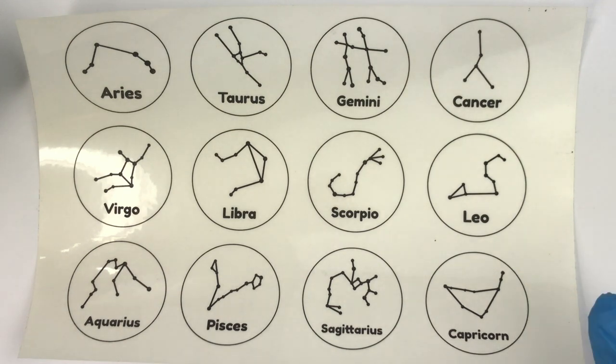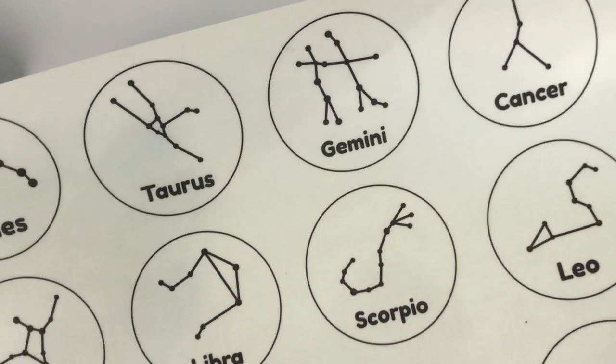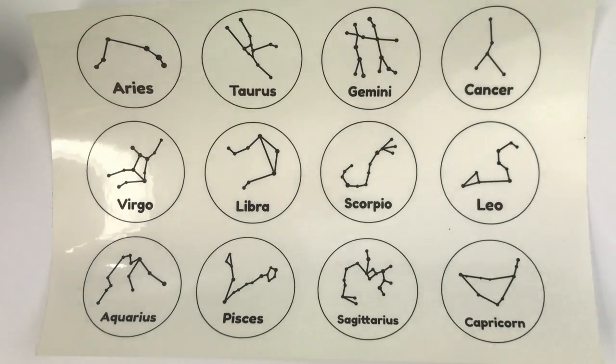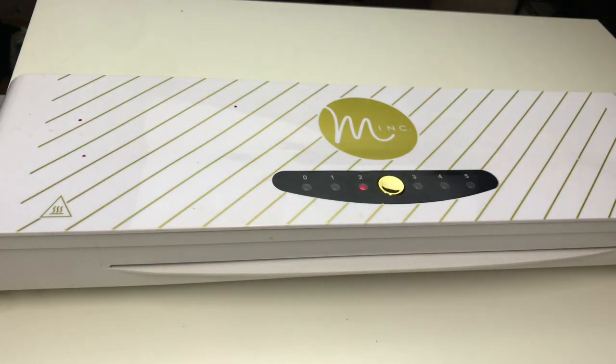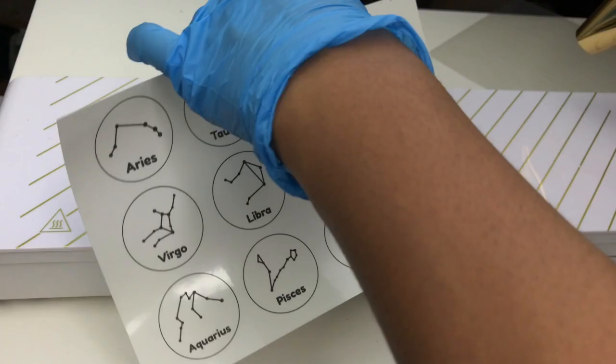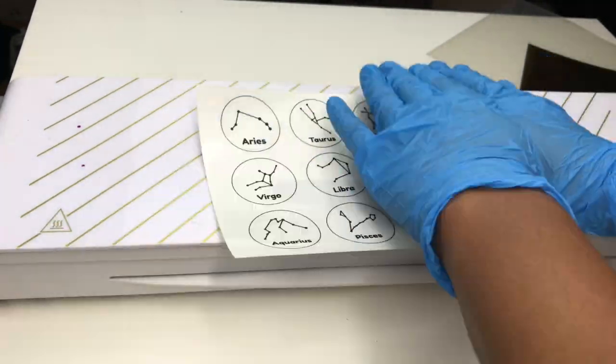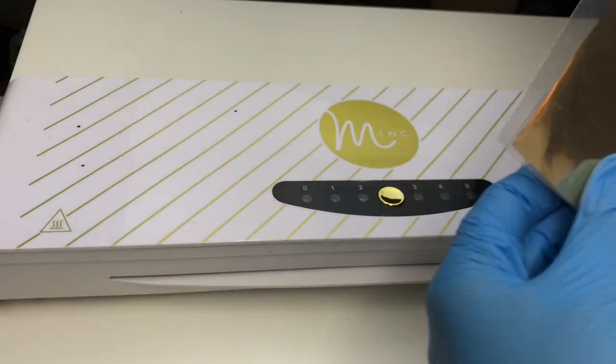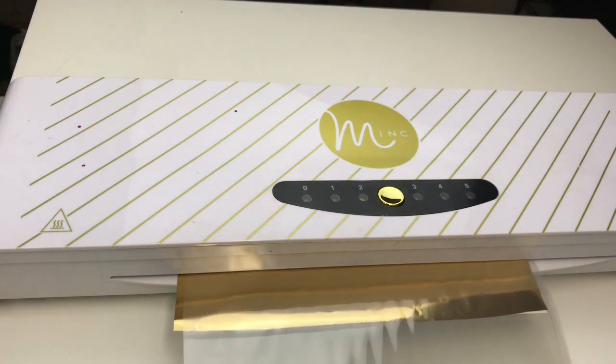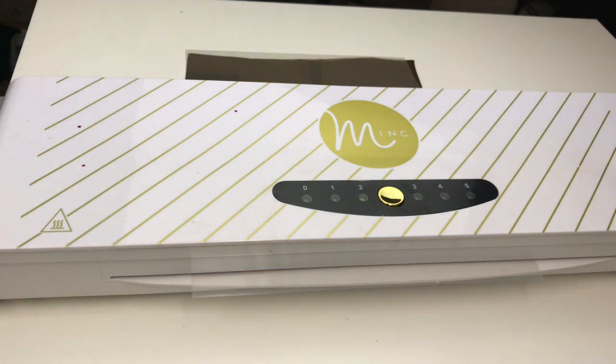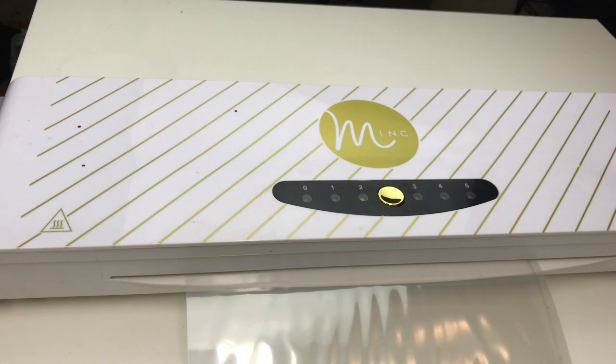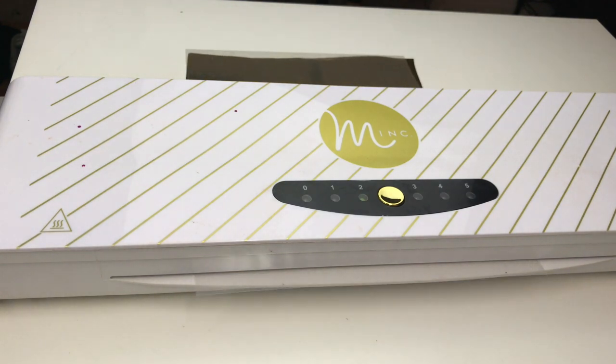So I went ahead and printed out these constellations on sticker paper using my laser printer. I do have an in-depth tutorial on how I make stickers and inserts for resin, so click the I-card above. Now I'm going to heat up my Minc machine. You can also use a laminator. I just prefer using the Minc because I feel like it lets the foil work better. Then I'm going to use the gold Minc foil and I'm going to put it in this pouch. This is not a laminator pouch. It's a different pouch that Minc makes for their machine, and I will make sure to link it down below because from that video that I made, a lot of people kept asking about this pouch.